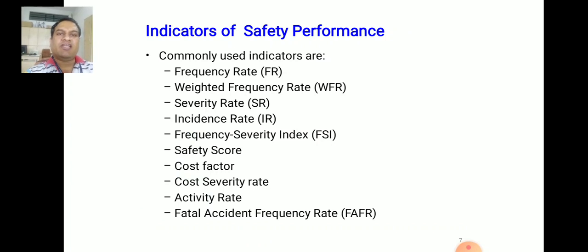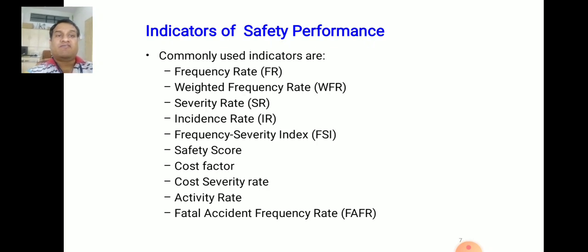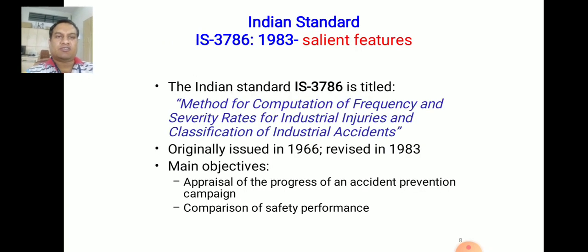The different Safety Performance Indicators are: Frequency Rate, Weighted Frequency Rate, Severity Rate, Incidence Rate, Frequency Severity Index (FSI), Safety Score, Cost Factor, Cost Severity Rate, Activity Rate, and Fatal Accident Frequency Rate. These are the important safety performance indicators used for calculations.